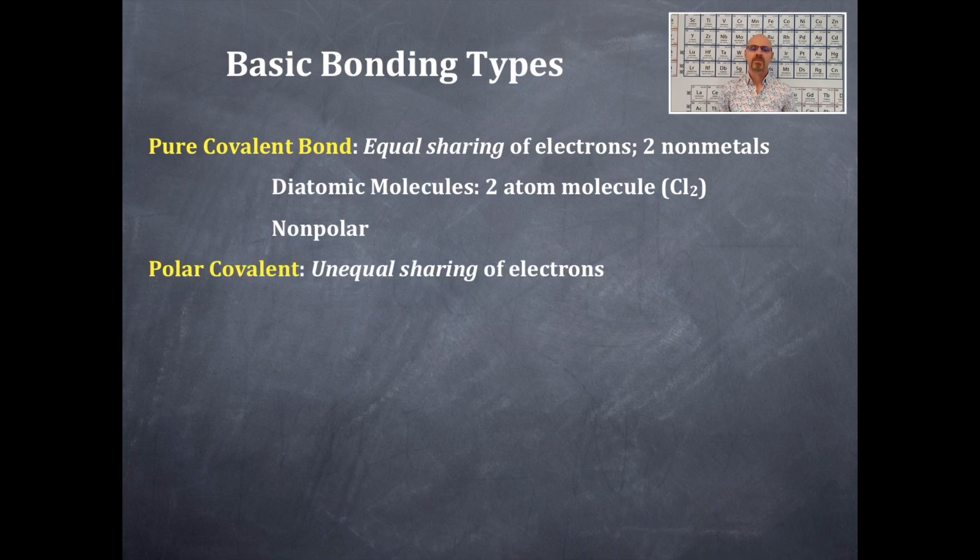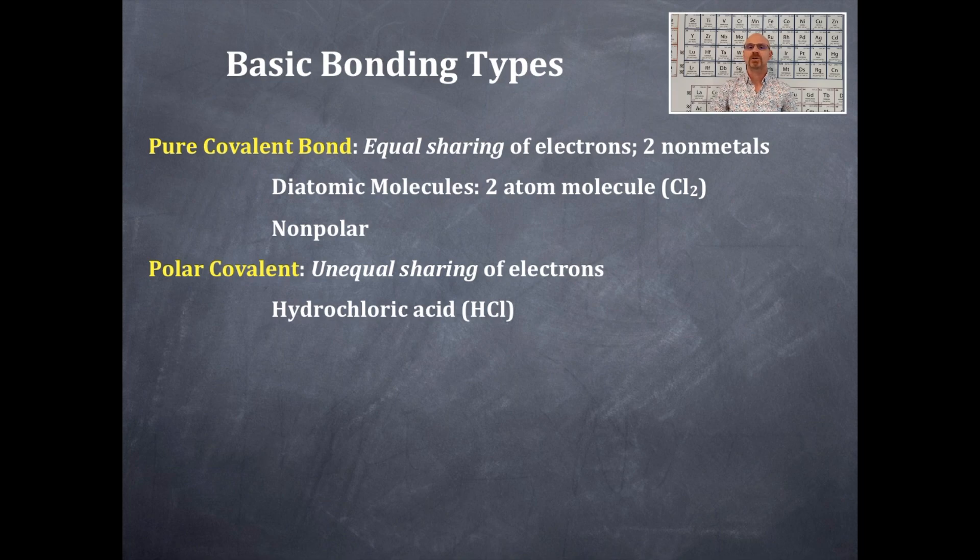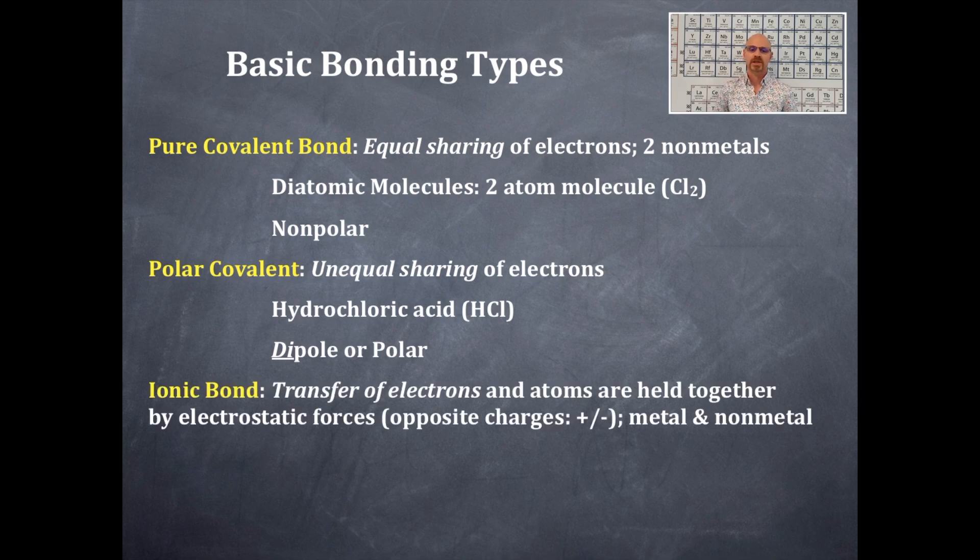Okay, then we have the middle bond type which is a polar covalent bond and that's an unequal sharing of electrons. It's still sharing electrons, but unequally. Okay, and a perfect example of that would be hydrochloric acid. That's HCl with an aqueous right there. Okay, and then these things that are polar covalent bonds have what's called a dipole. Di is for two - it has two poles to it and these would lead to polar molecules. That's going to be very important here.